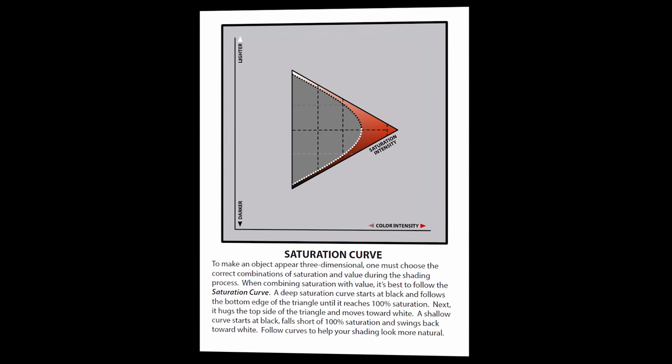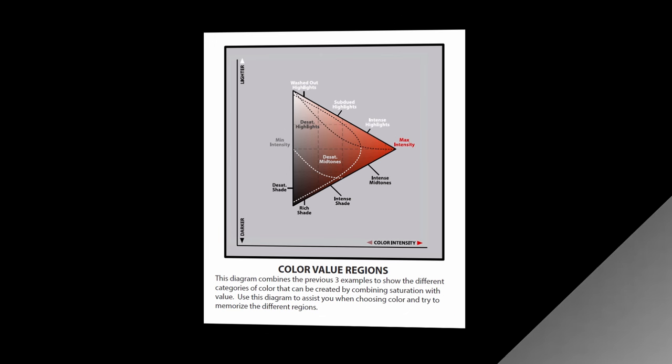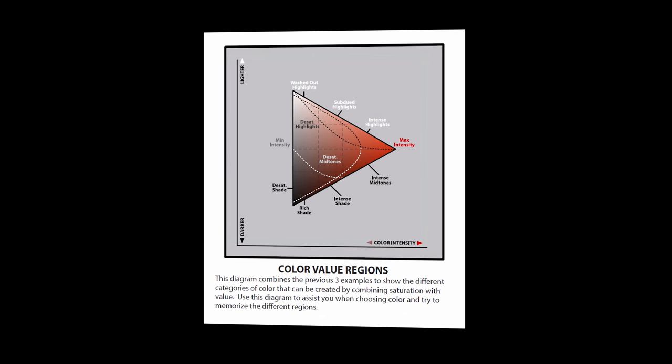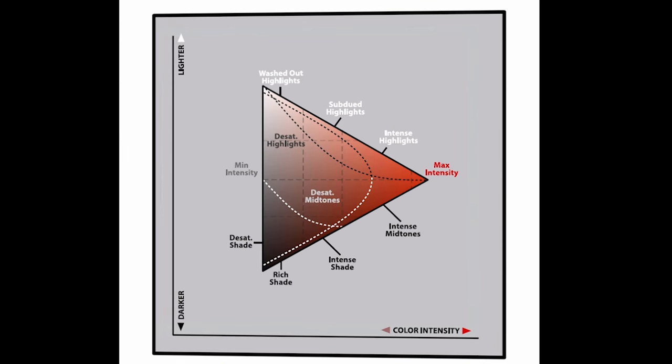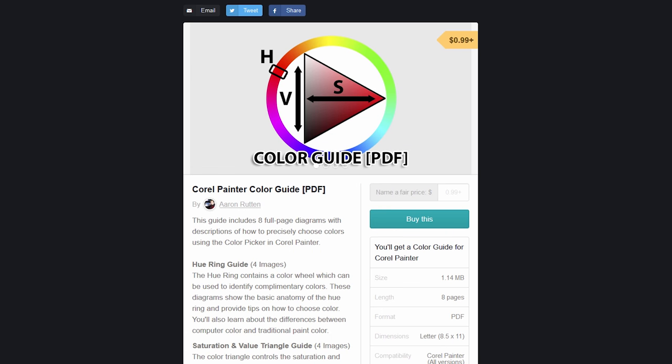And the final page discusses color value regions. This diagram combines the previous three examples to show the different categories of color that can be created by combining saturation with value. Use this diagram to assist you when choosing color and try to memorize the different regions. So you can kind of browse around this chart. If you wanted a desaturated highlight, you can find that in the top left. If you wanted an intense highlight, you could find that towards the right end of the triangle, and so on.